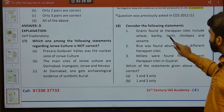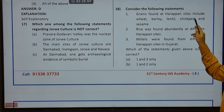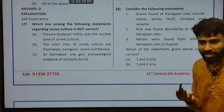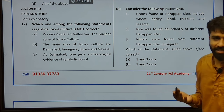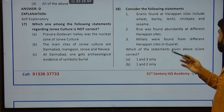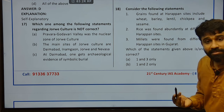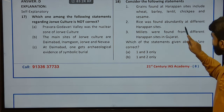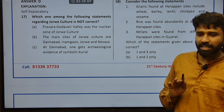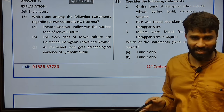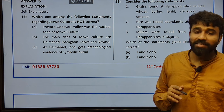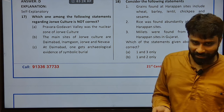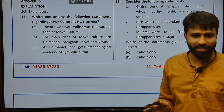Consider the following statements. Grains found at Harappan sites include wheat, barley, lentil, chickpea and sesame. Mustard, sesame, barley, wheat, lentil, chickpea, cotton, corn. Rice was abundantly found in different Harappan sites — no, it was found but not abundantly. Bronze was found but not abundant. Rice was found but not abundant. Millets were found from different Harappan sites in Gujarat.